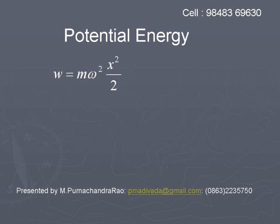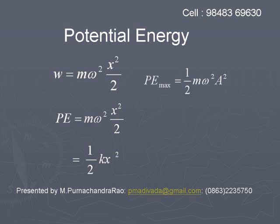So the potential energy equals m omega squared x squared by 2. Since m omega squared equals k, the relation for potential energy can also be written as half k x squared. The maximum potential energy occurs when displacement is maximum, and equals half m omega squared a squared.